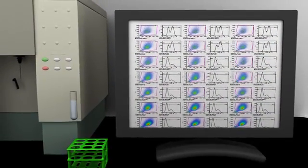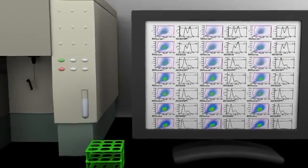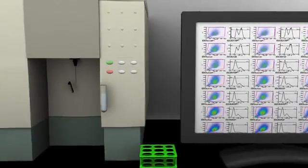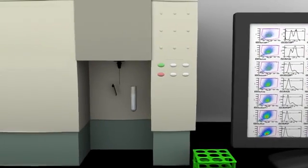Once a suspension of individual cells has been prepared for flow cytometry analysis from cells, tissues, or organisms, the prepared sample is placed on the flow cytometer.